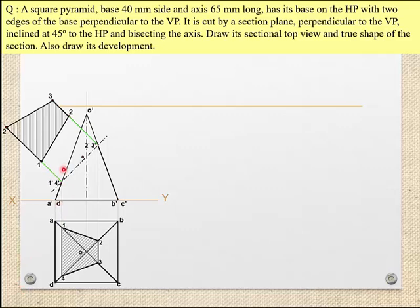Now learning about development in a square pyramid. If you have a structure, we will look at the structure — it is the same step. Next, we will find the true slant length. The true slant length versus the apparent slant length: this is the apparent slant. To find the true slant length we use the rotation method in the section.